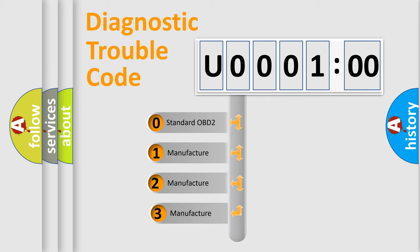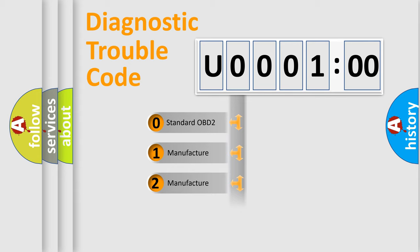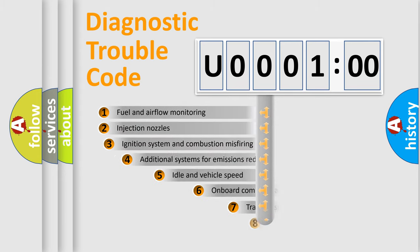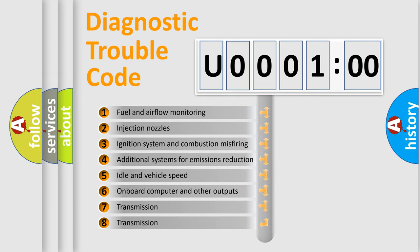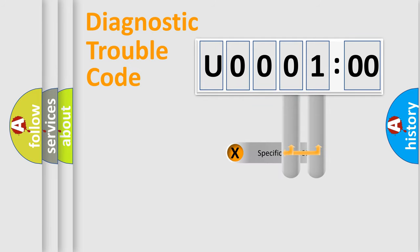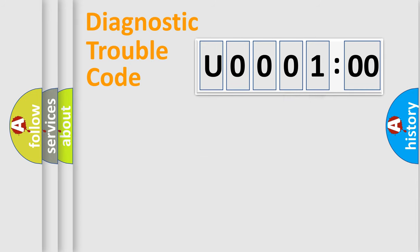If the second character is expressed as zero, it is a standardized error. In the case of numbers 1, 2, or 3, it is a manufacturer-specific error code. The third character specifies a subset of errors. This distribution is valid only for the standardized DTC code, and only the last two characters define the specific fault of the group.